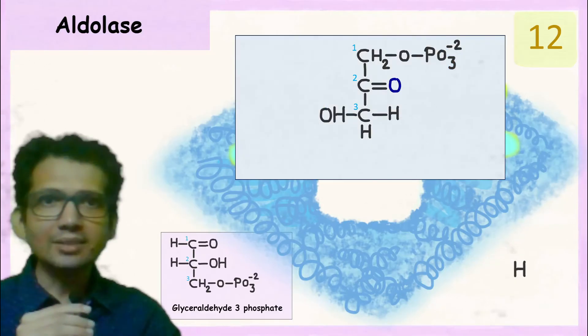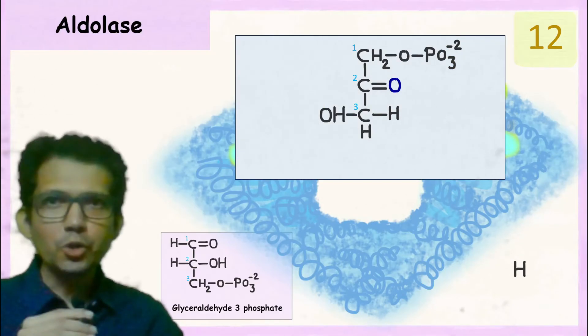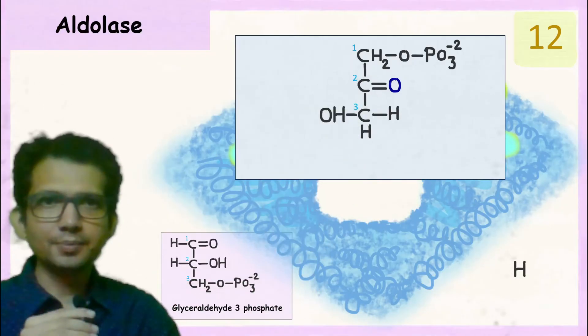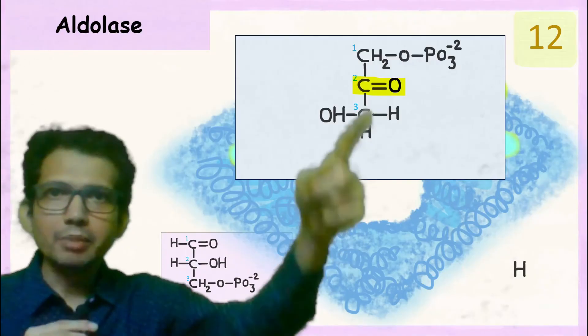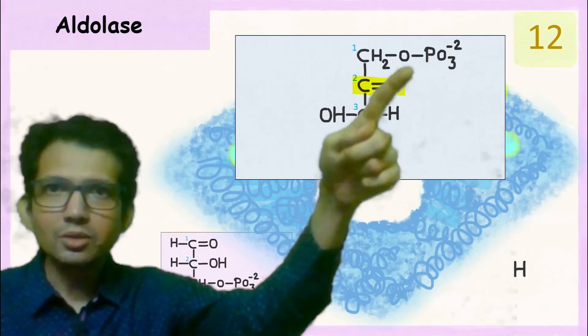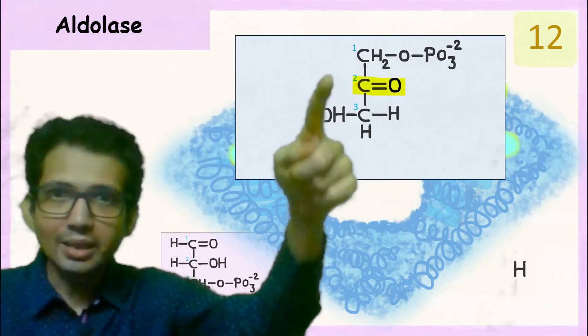So now let's analyze the product formed. The new product has 3 carbon atoms. Then we have a double bond between second carbon atom and oxygen. So this over here is the keto group.